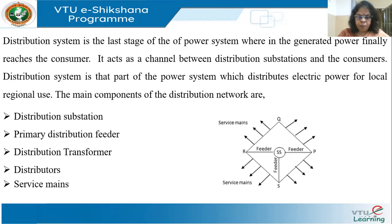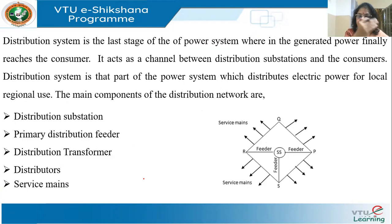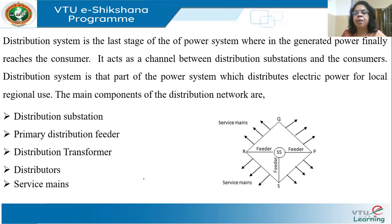The distribution system is the last stage in the power network. You have generation, transmission, and then finally distribution. Whatever power is generated, the distribution system delivers it to various customers — residential, domestic, agricultural, industrial, and commercial — acting as a channel between the distribution substations and the consumers.